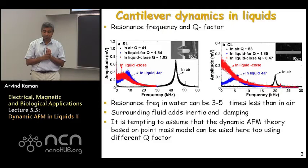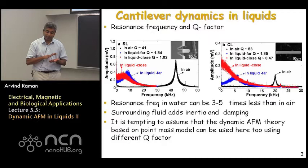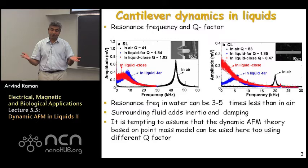On the right, similar results are shown for a conventional long cantilever where the Q in air is 53 and in liquid far from the sample is 1.85. But as you bring it really close to the sample, the resonance peak effectively vanishes — meaning the Q factor has become less than 1. So the resonance frequency decreases in water by a factor of about 3 to 5 compared to air, and the Q factor can go down by a factor of 10 to 30, depending on the cantilever.